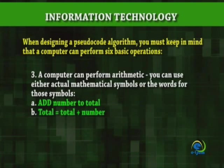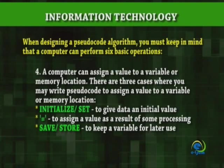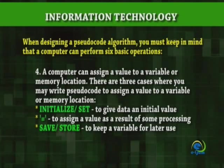For arithmetic, examples include: A. Add number to total. B. Total equals total plus number. Operation 4: A computer can assign a value to a variable or memory location. There are three cases: 1. Initialize/set to give data an initial value. 2. Equal to assign a value as a result of some processing. 3. Save/store to keep a variable for later use.